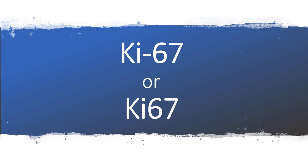KI-67 proteins are encoded by the MKI-67 gene as two isoforms, both of which serve as a surfactant to keep mitotic chromosomes apart after breakdown of the nuclear envelope. Also, KI-67 facilitates chromosome attachment to the mitotic spindle and individual chromosome mobility by covering the surface of chromosomes and creating a membrane-independent intracellular compartment. These are a couple of demonstrated functions of KI-67.